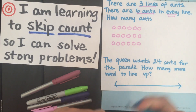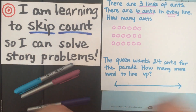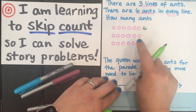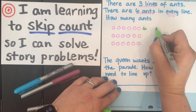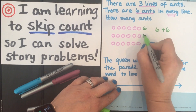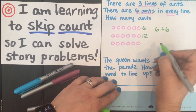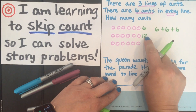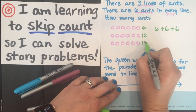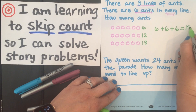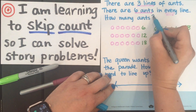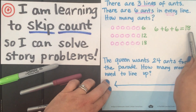I'm going to switch to green so it shows up a little better. If I have six in this row and I add six more, six plus the next line gives me 12. Then I have one more six, so I add six on to 12 and I would have 18 ants in all. So if it asks how many ants, I'm thinking it would be 18. That's counting the rows in my array — I'm skip counting by sixes.